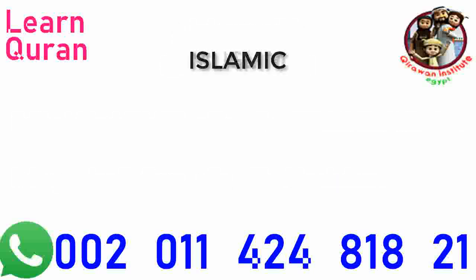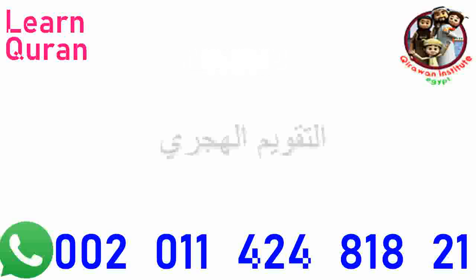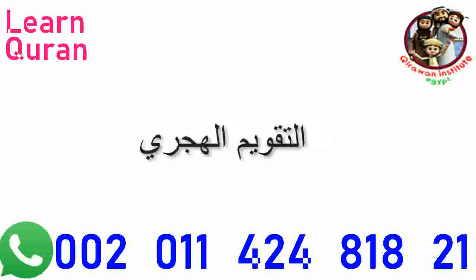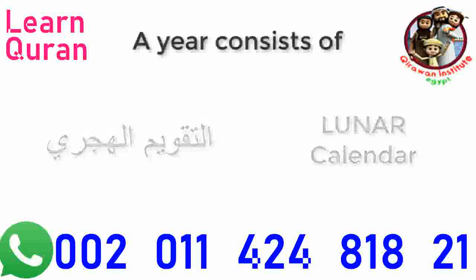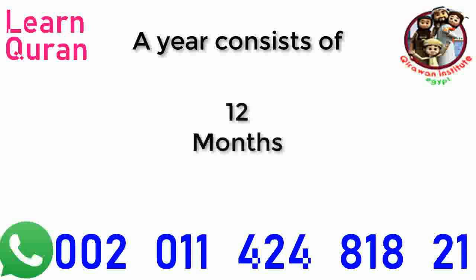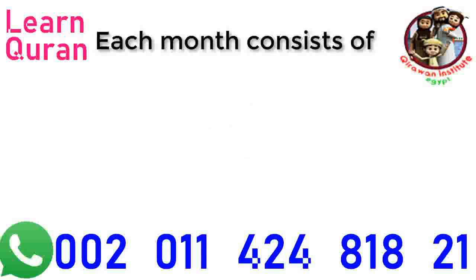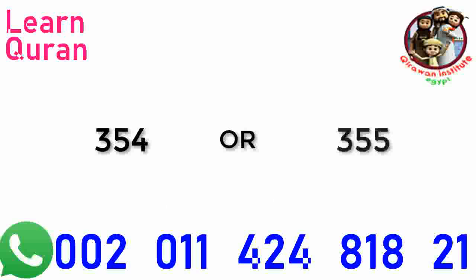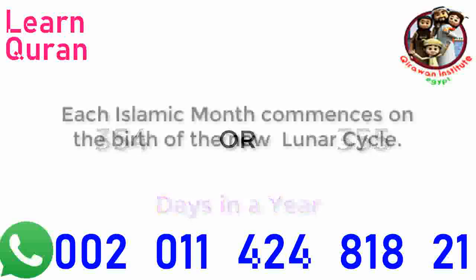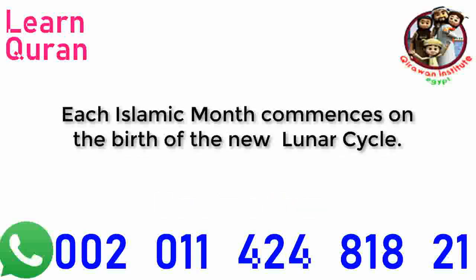The Islamic, Muslim, or Hijri calendar, also known as at-Taqween al-Hijri in the Arabic language, is a lunar calendar. A year consists of 12 months. Each month consists of 29 or 30 days, making a total of 354 or 355 days in a year. Each Islamic month commences on the birth of the new lunar cycle.